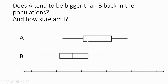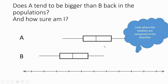The more overlap you get in your boxes, the more unsure we are. In this case we notice there is an overlap between the boxes, so there is no separation, and we now need some guidelines. We're going to use the Level 5 guidelines, which work on the half concept and three quarters. We look at where the medians and the quartiles are.